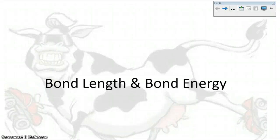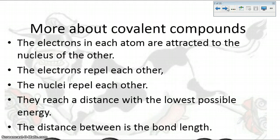In this podcast we're going to talk about bond length and bond energy. Let's talk a little bit more about covalent bonds first. In covalent bonds, electrons in each atom are attracted to the nucleus of the opposite atom. The electrons in each atom repel each other, and the nuclei all repel each other.